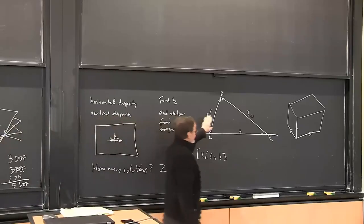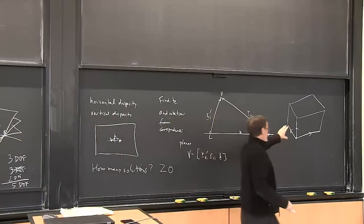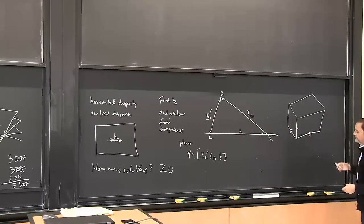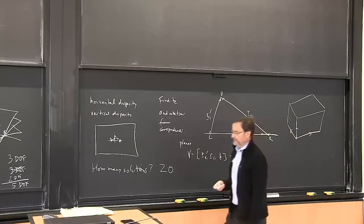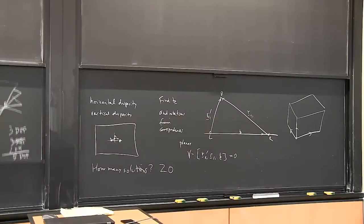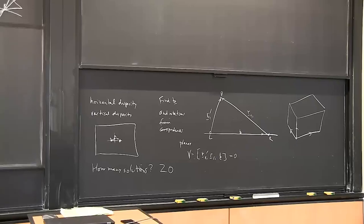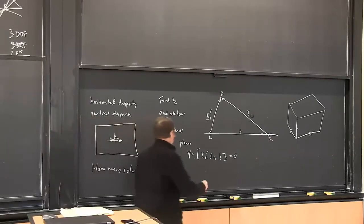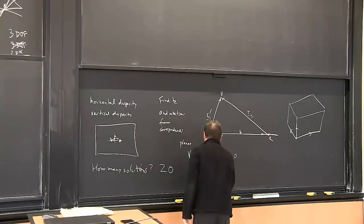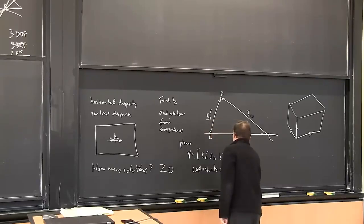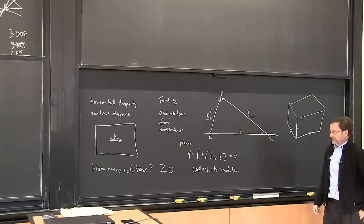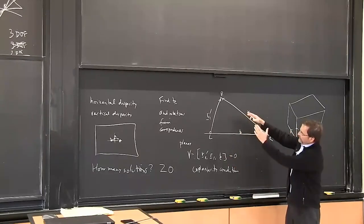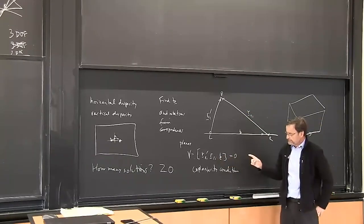In the ideal case, we expect the triple product of those three vectors to be zero. That's called the coplanarity condition, and it's the basis of all of this stuff. Right away you can imagine a potential least squares method: for every correspondence, compute this triple product. Since it could be positive or negative depending on the directions of the vectors, we can't just add them up — we add up the squares.